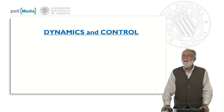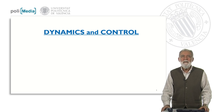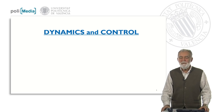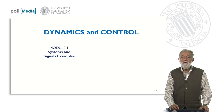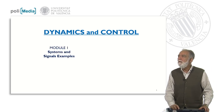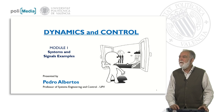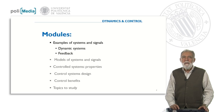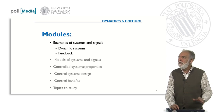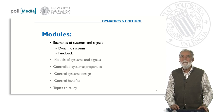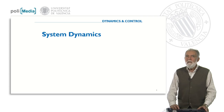Hello everybody. Today we are starting the course on dynamics and control, and we are going to start in Module One, which is about systems and signals. My name is Pedro Albertos from the Polytechnical University of Valencia in Spain. This is the first module and you can see here the context of the course. We are going to discuss what are dynamic systems and what is the concept of feedback.